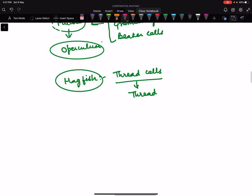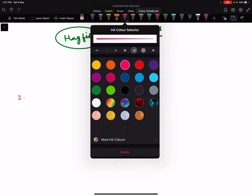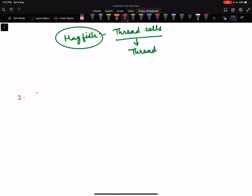Next comes, after cyclostomes come fishes. If we classify the fishes, they are divided into two classes.